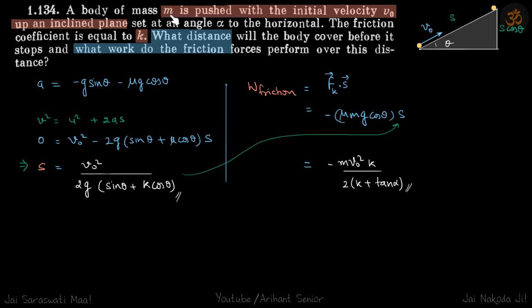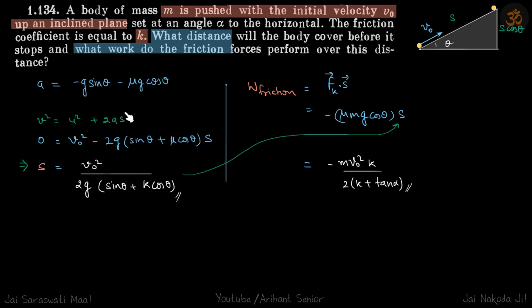A mass m is pushed up an inclined plane with a velocity v naught. We need to find what distance it will travel before it stops and what is the work done by the friction. As it's moving up, we know its deceleration is going to be constant — that is g sin theta. Taking the upward direction as positive, the acceleration is minus g sin theta minus mu g cos theta, because of the forces mg sin theta and frictional force mu mg cos theta. Since this is constant, we can use the equation of motion: v squared equals u squared plus 2as. The final velocity is zero and the initial velocity is v naught.